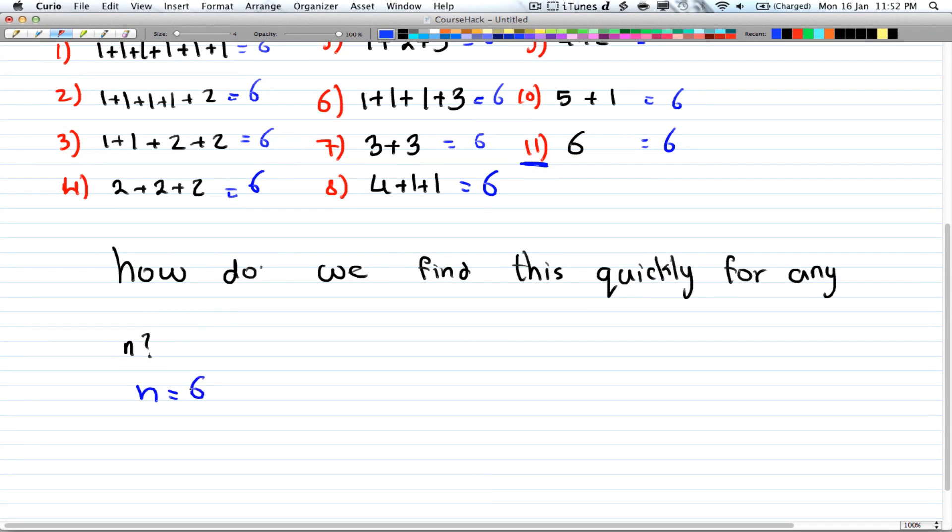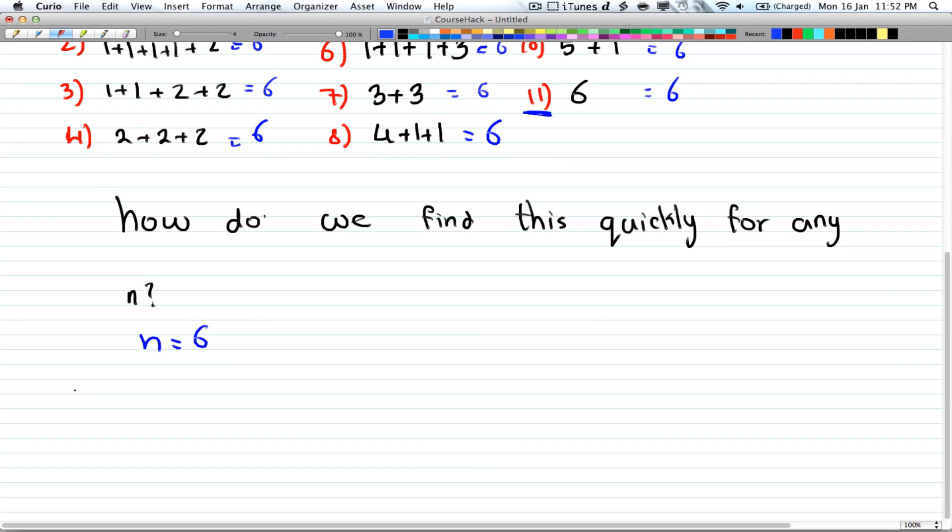We'll be using generating functions. For n equals 6, we can have six ones. So for the ones you can have none or one one or two ones or three ones or four ones or five ones or six ones. So this calculates up to six ones in total. Then you're going to take how many twos you can have. Well you can have no twos or one two or two twos or three twos.